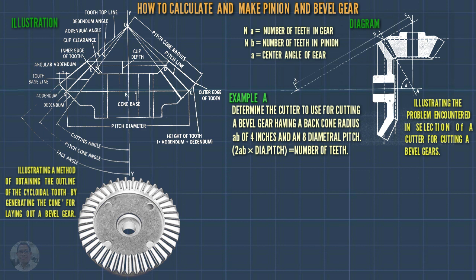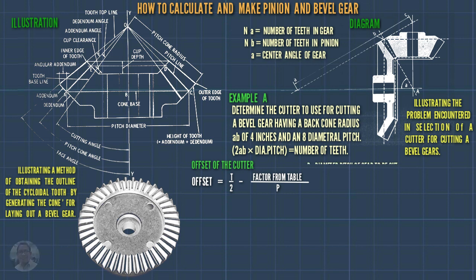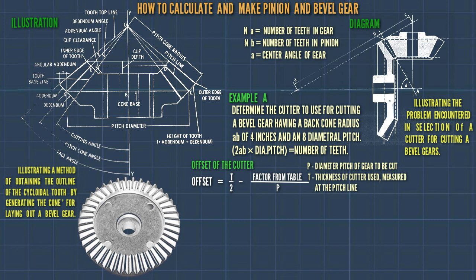We proceed to offset the cutter. Offset equals T divided by 2, minus the factor from the table, divided by P, where P is the diametral pitch of the gear to be cut and T is the thickness of the cutter used. Be sure that the pitch line is correctly set.